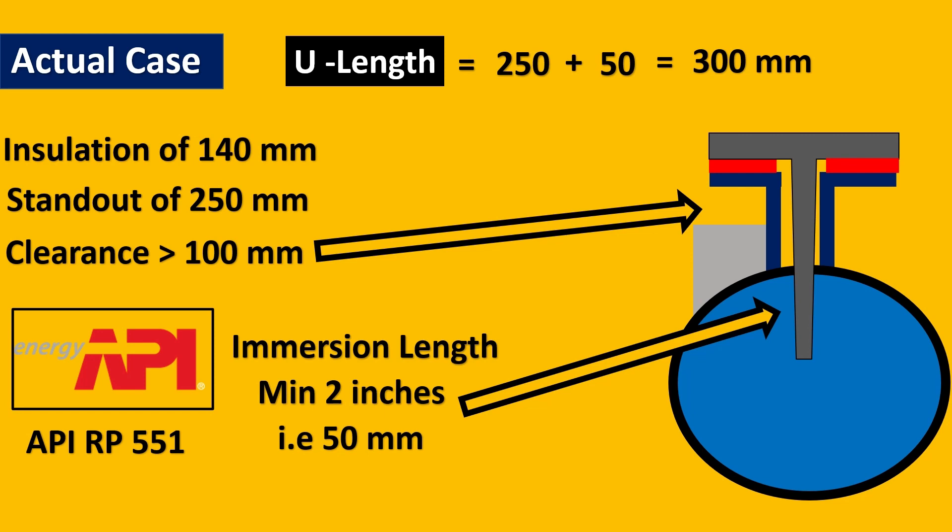So this is how you can use in Excel once you are clear with the concept and calculate U-length for all the thermowells that have to be used in the plant. And then remember one thing: they have to go through the wake frequency calculations and maybe the length or the tip thickness would get modified for a very few cases. But majority of them usually pass.